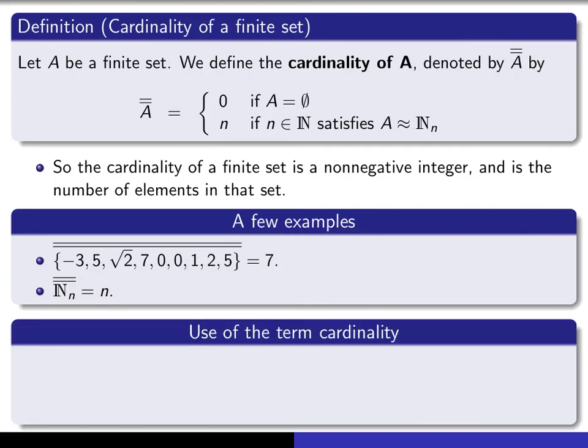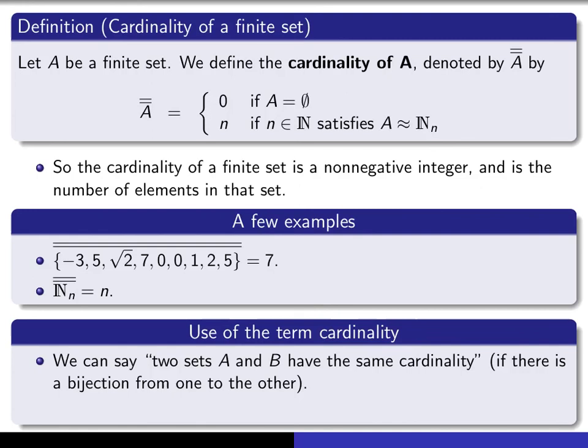So let me just mention the use of the term cardinality. How are you allowed to use this term cardinality? So we already introduced the term in an earlier lecture. We say two sets, A and B, have the same cardinality. That's provided there's a bijection from one to the other. So we don't talk about necessarily the cardinality of A by itself or the cardinality of B by itself. We just say the two sets have the same cardinality. We're using the term cardinality in this sense as a means of comparing the sets.